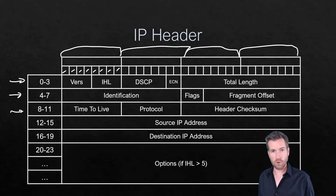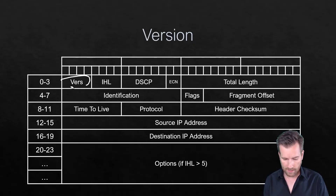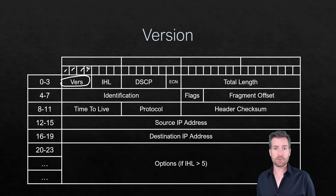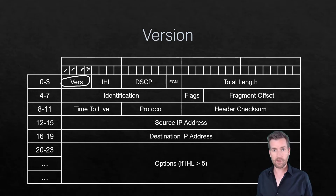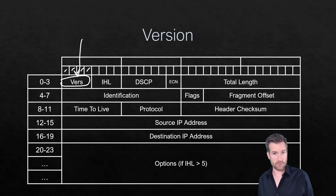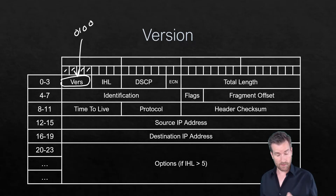First up we have the version field, which takes up four bits — giving up to 16 possibilities (0 through 15). The version simply identifies what version of IP header this is. When a router receives the packet, it reads this field to know how to handle it. For IP version 4, the bits would be 0100.